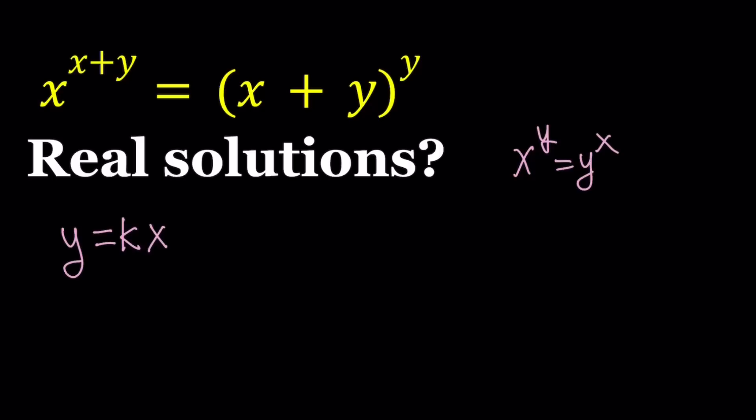Let's do the replacement. We get x to the power x plus kx equals x plus kx to the power kx. So y will be replaced with kx everywhere. Looking at this equation you'll probably conclude that if x is zero then y is zero.